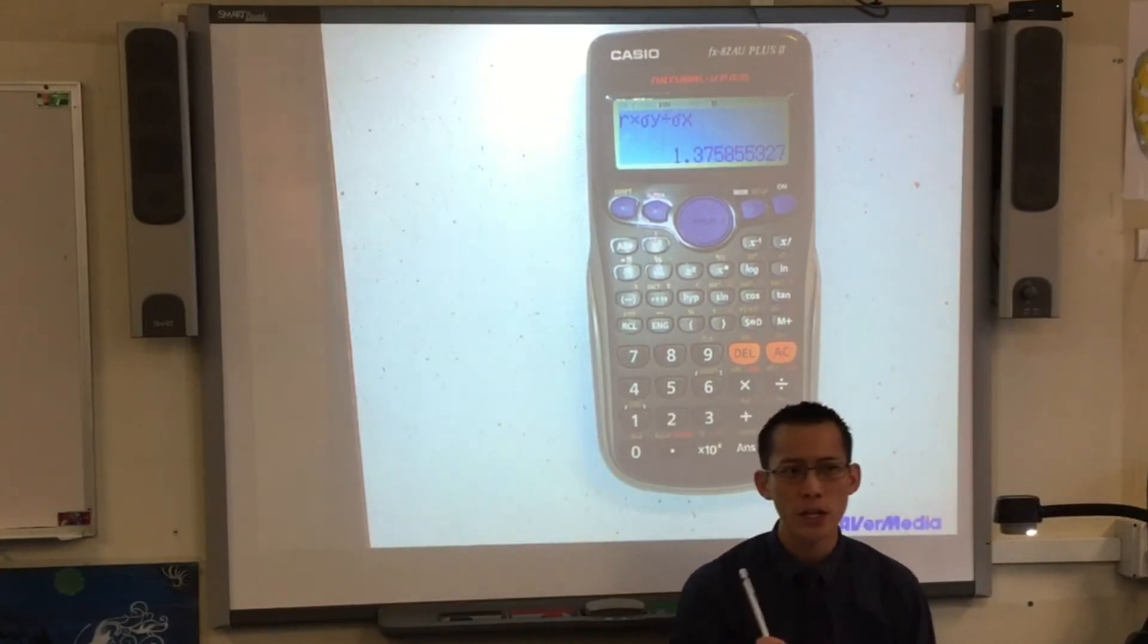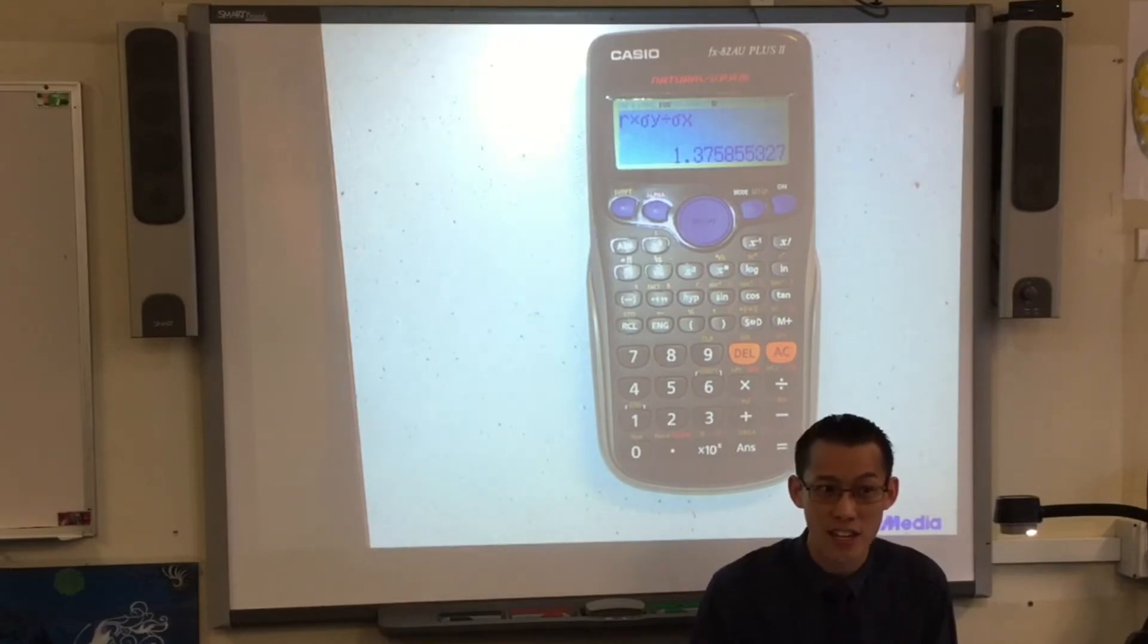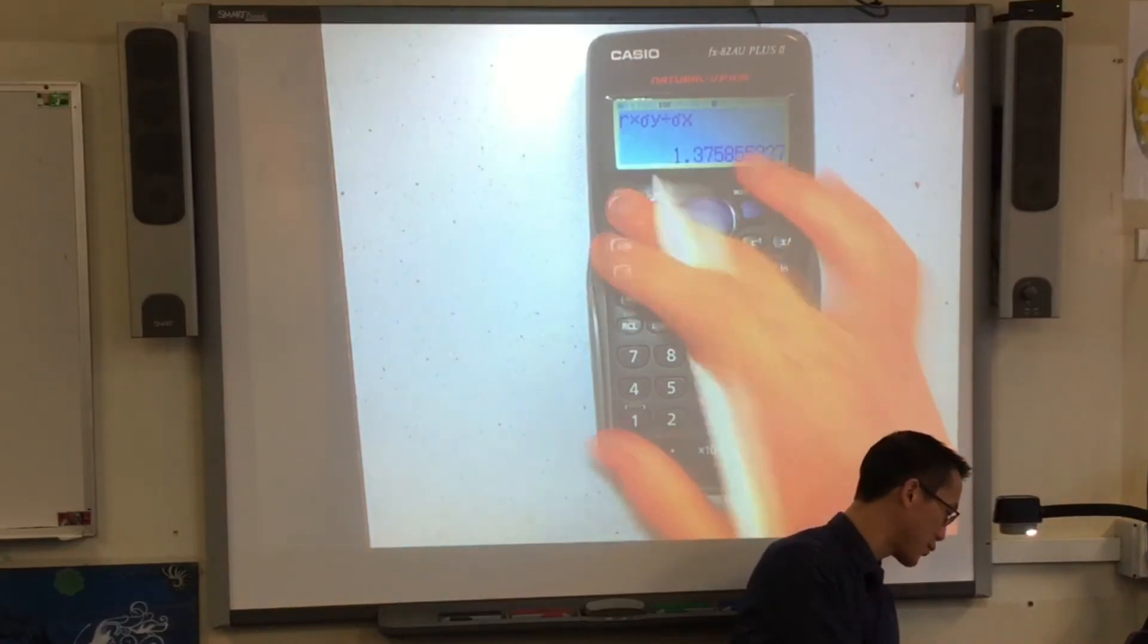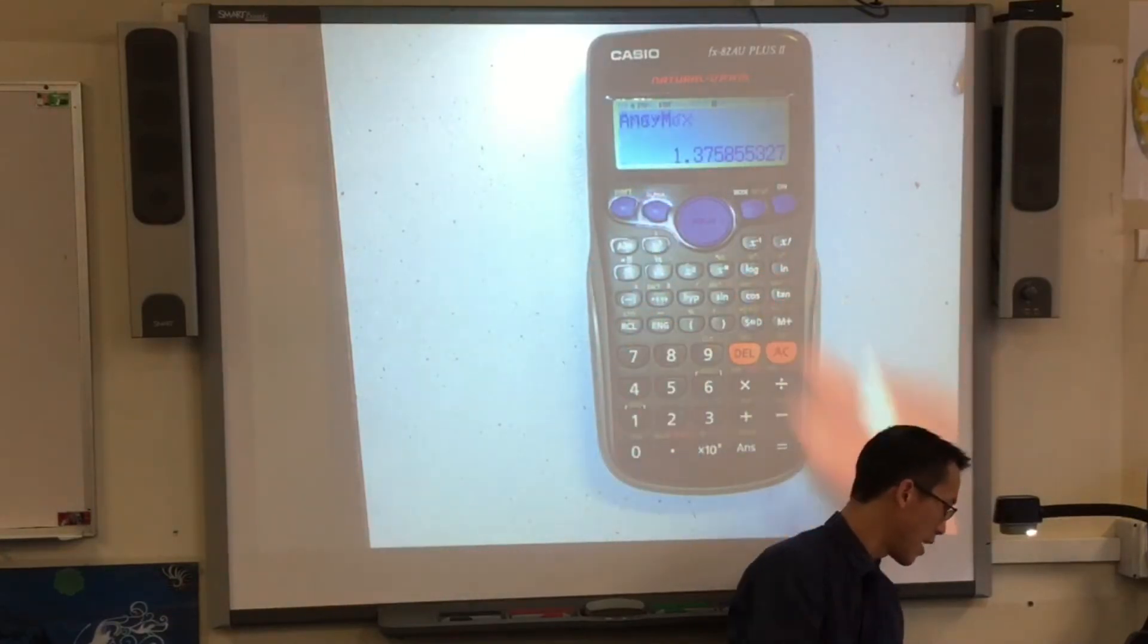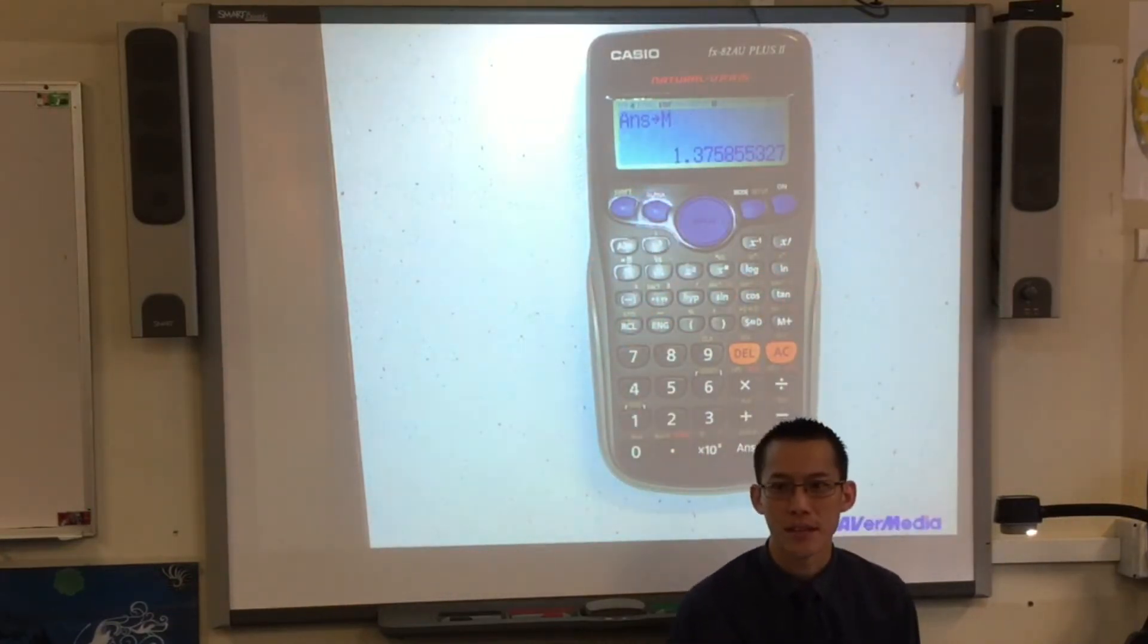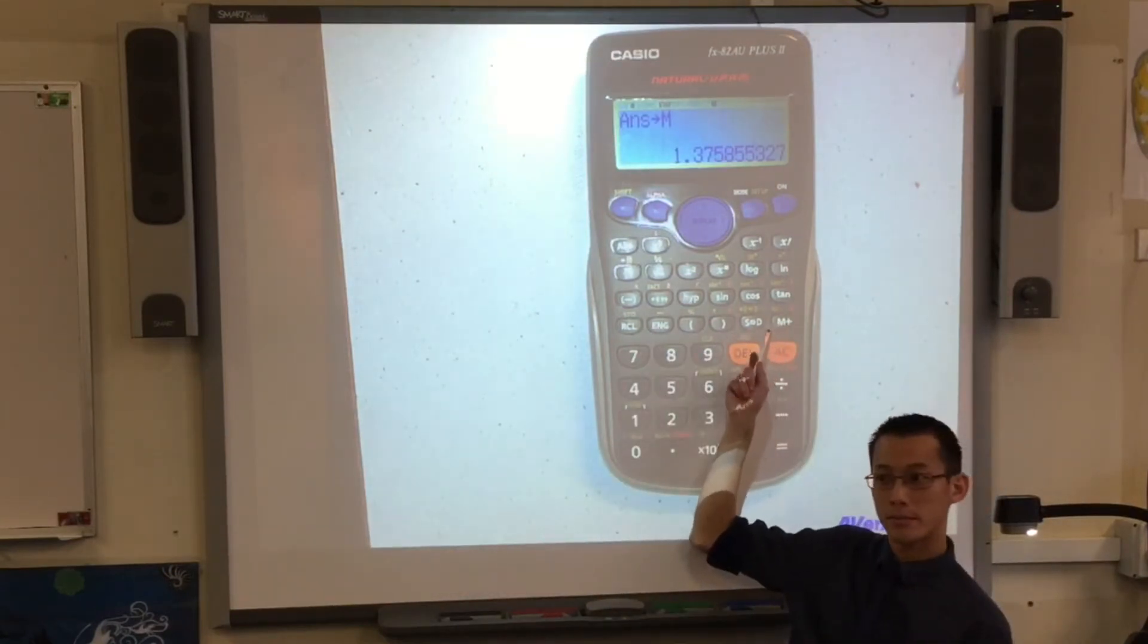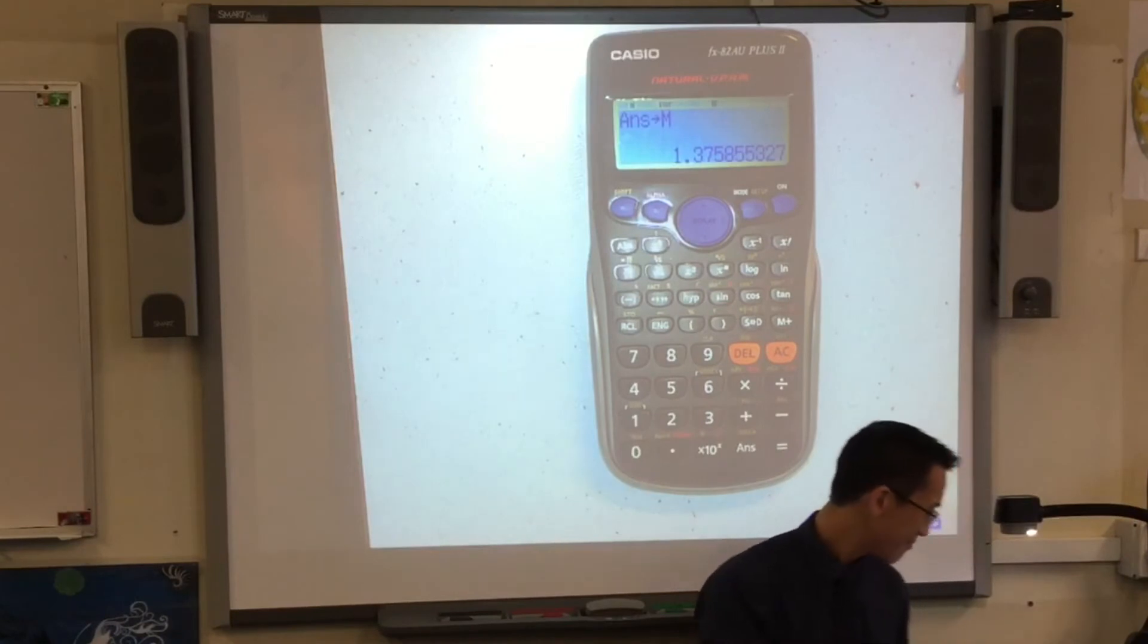By the way, just have a look at your calculator. This is a gradient, right? You can call it anything you like, but what would make sense as a letter to choose? M. You've got an M. Use M. So I'm going to go shift, store, and I'm going to put it into M. Do you see where M is? It's over here. Oh, there is an M.